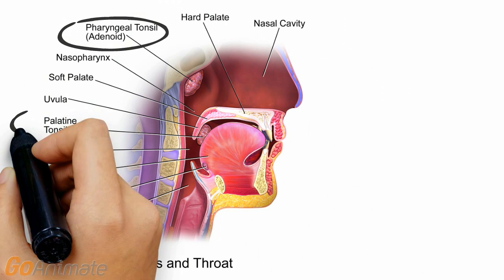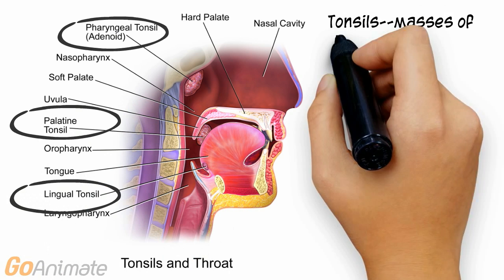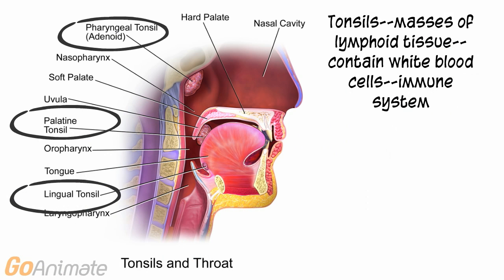The tonsils are masses of lymphoid tissue that contain white blood cells that help to fight off pathogens. There are the pharyngeal tonsils or adenoids, the palatines, and the lingual tonsils.